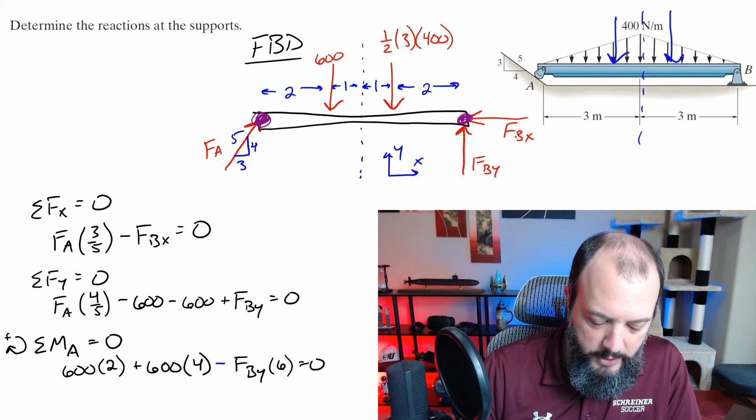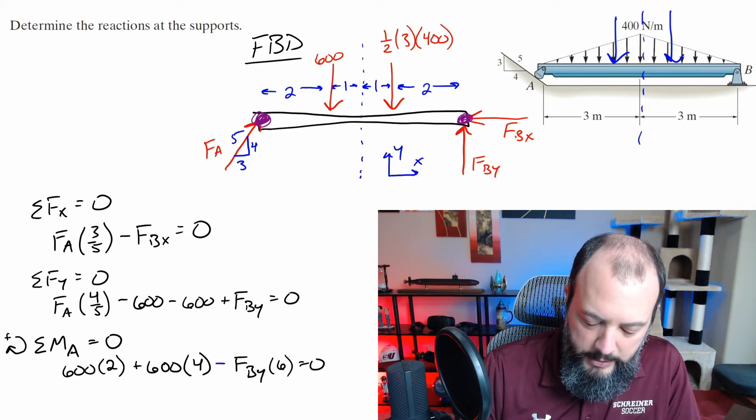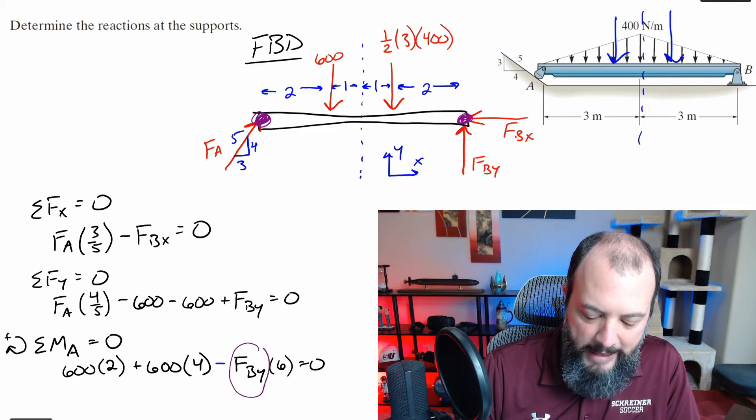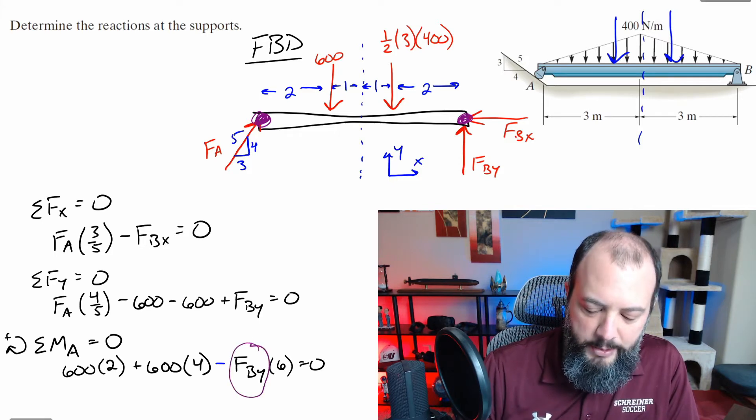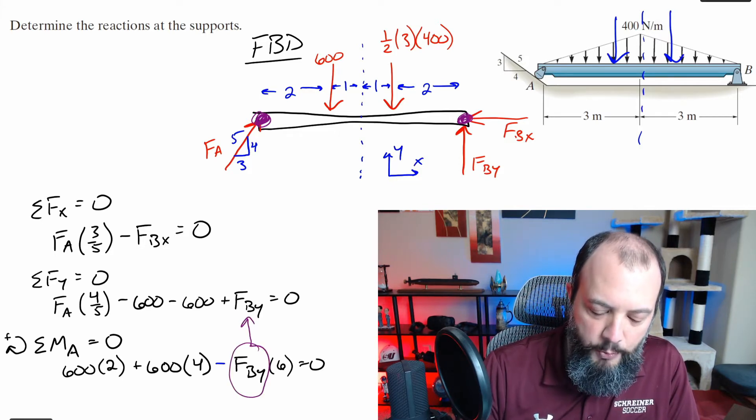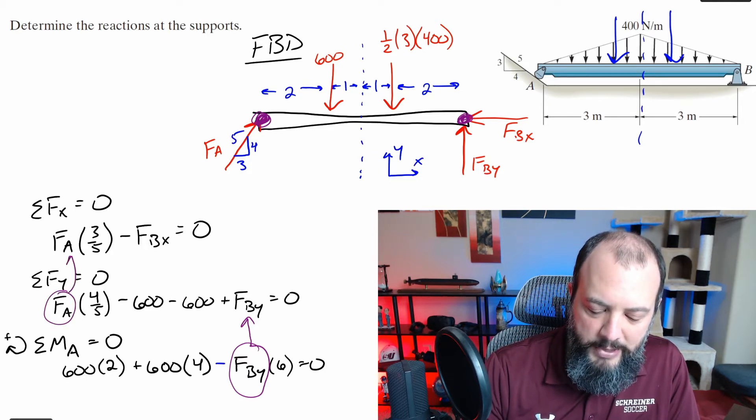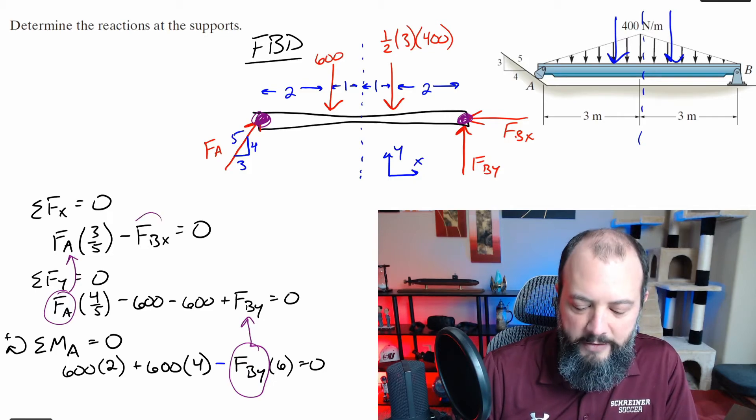So my sequence for solving this problem numerically would be to first solve for FBY using the moment equation, then plug that into the sum of forces in Y equation, which allow me to solve for FA, and then I can plug FA into the x direction equation and solve for FBX. So this is one of the simpler, more straightforward problems in this chapter, but you'll see in all the follow-up problems, the solution style is going to be exactly the same.